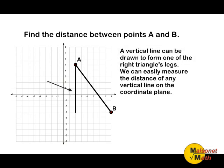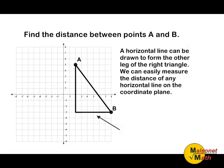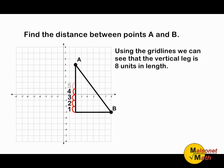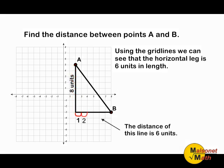A vertical line can be drawn to form one of the right triangle's legs. We can easily measure the distance of any vertical line on the coordinate plane. A horizontal line can be drawn to form the other leg of the right triangle. We can easily measure the distance of any horizontal line on the coordinate plane just as we can any vertical line. Using the grid lines, we can see that the vertical line is 8 units in length, and the horizontal line is 6 units in length.